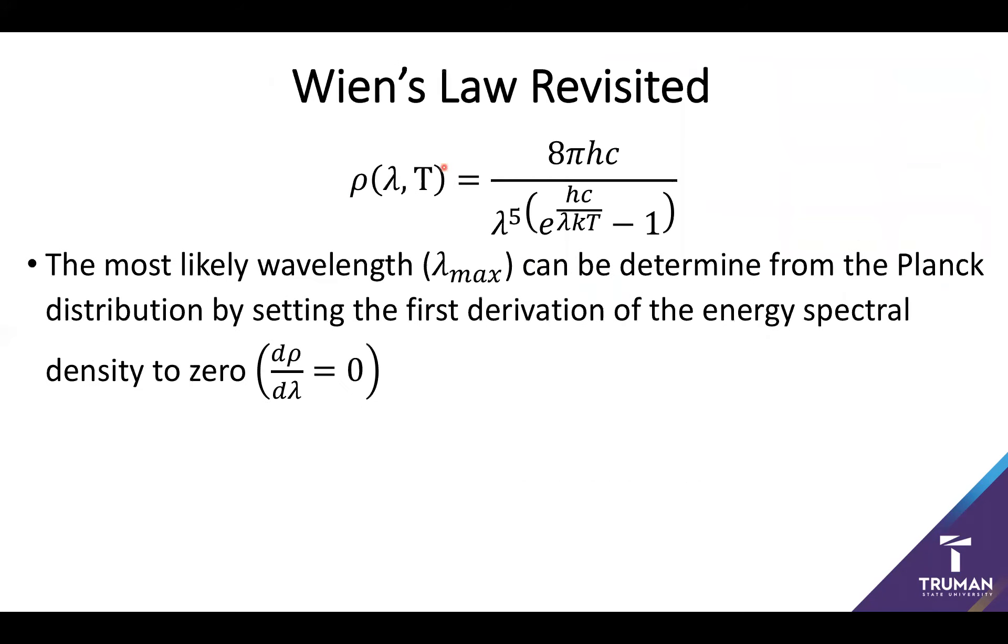We also want to make sure it can generate our two classic distributions. First, we want to make sure it can nail Wien's Law. As a reminder, Wien's Law was the correct prediction of the maximum wavelength, essentially the peak wavelength at those intermediate energies. What we can do is try and determine the most likely wavelength, this lambda max, by simply taking the first derivative of the energy density with respect to wavelength. Take this, set it equal to zero, I should be able to find the most probable or maximum value.